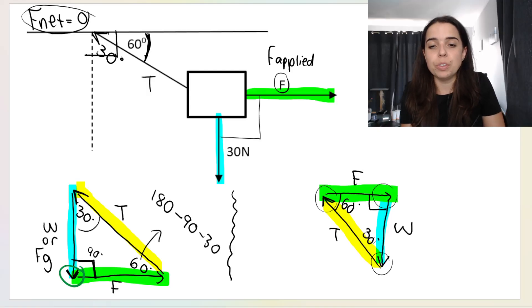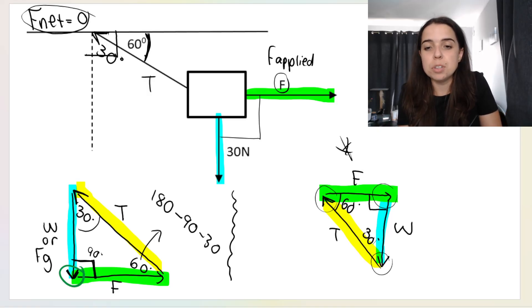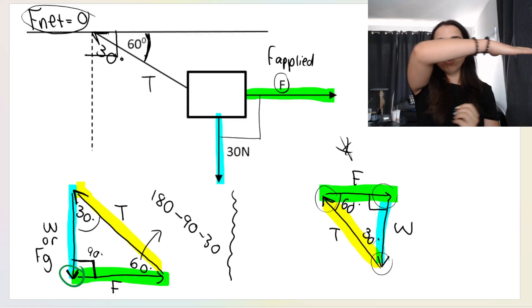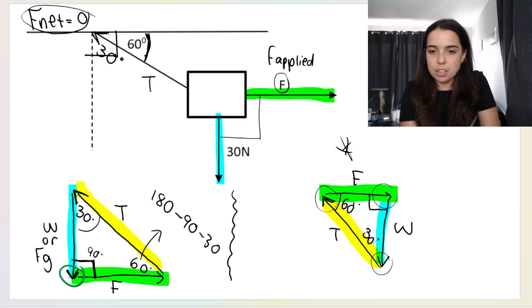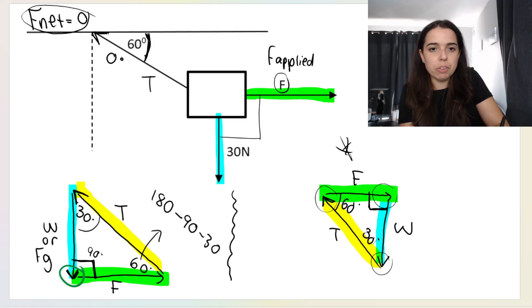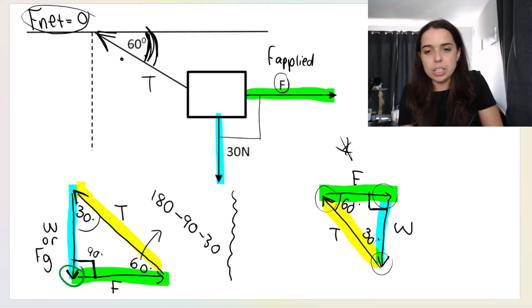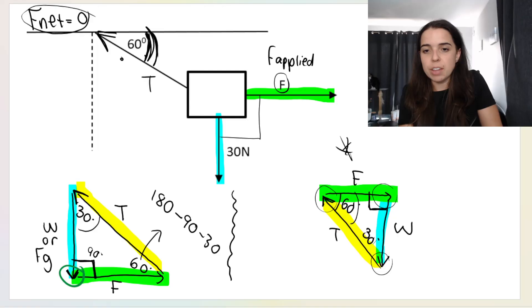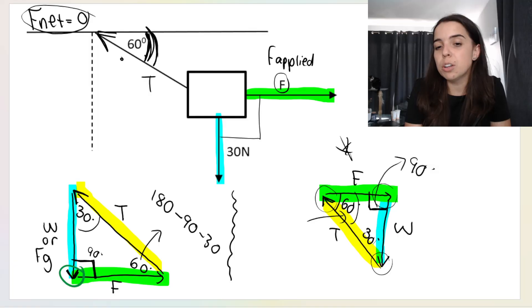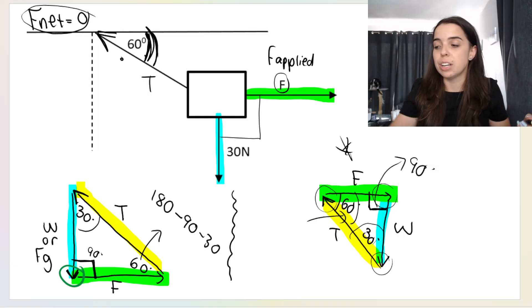If you look at this other triangle orientation, it's the same situation. Between force applied and weight I've got 90 degrees. Then the angle given is 60, sitting on top of the tension line. If that's 90 and that's 60, using the sum of angles in a triangle we find the last angle, which is 30 degrees.